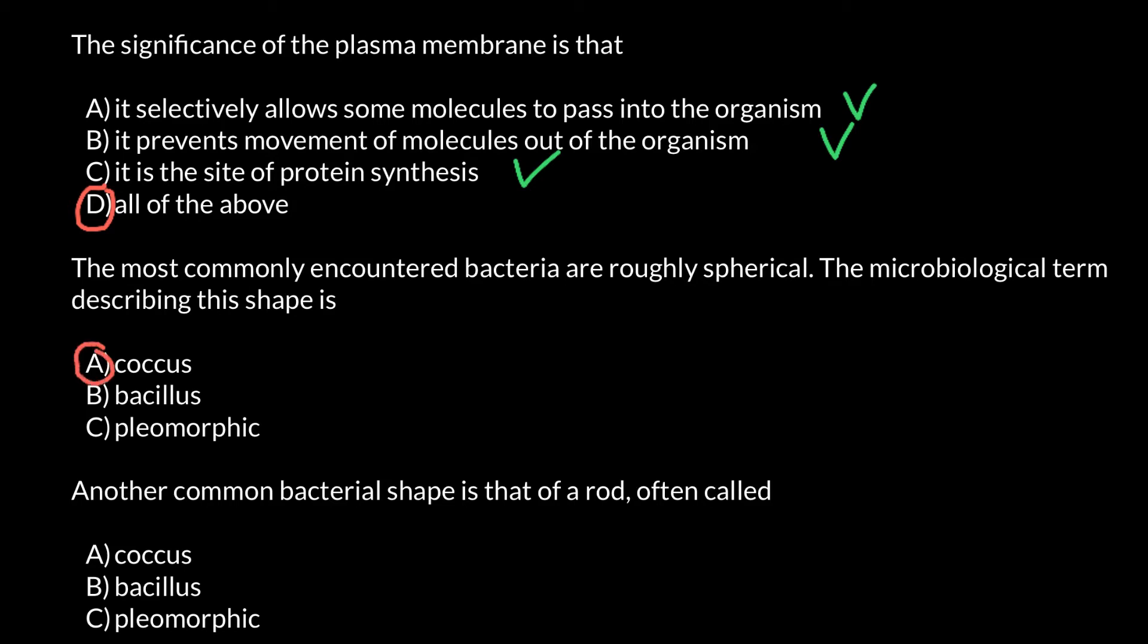Next question. Another common bacterial shape is that of a rod, often called... and we have two synonym words: rod-shaped bacteria and bacillus. These are two synonyms that basically give a name to the same type of bacteria, that is rod-shaped.